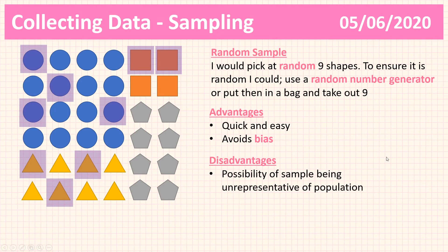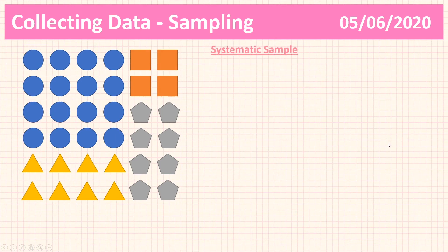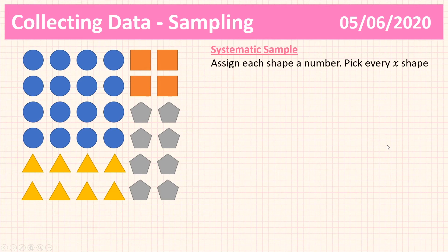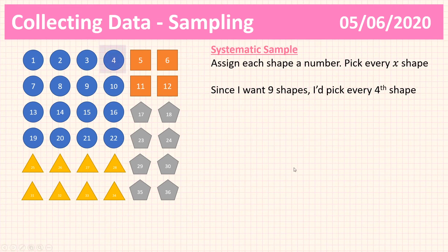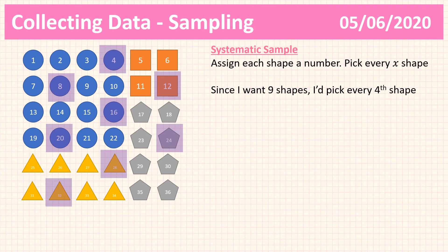Our next type of sampling is a systematic sample. We assign each shape a number and then pick every xth shape. Since I want nine shapes from 36, I pick every fourth shape — because 36 divided by 4 equals 9. I've numbered all my shapes one to 36, and I'm going to pick every fourth one — so shape 4, 8, 12, 16, and so on — until I've gone through all of my shapes.